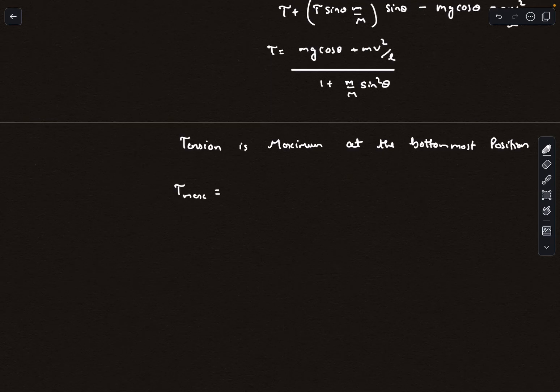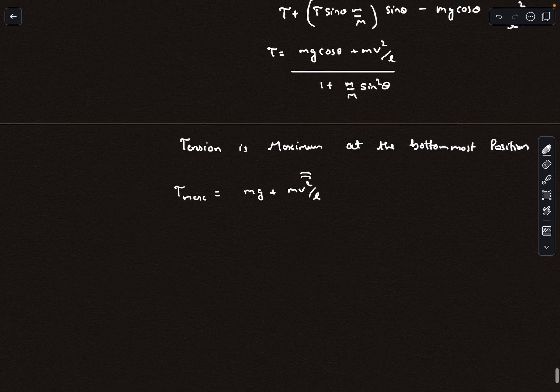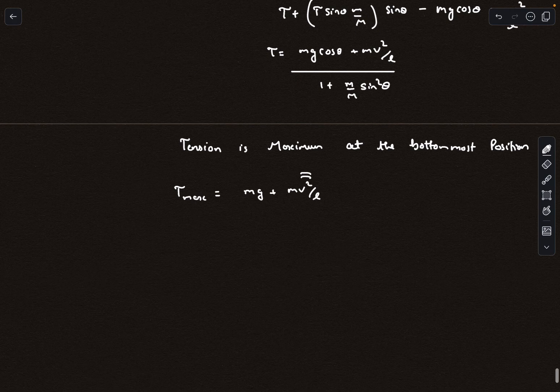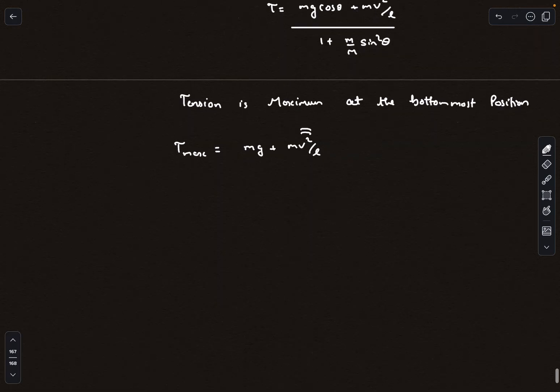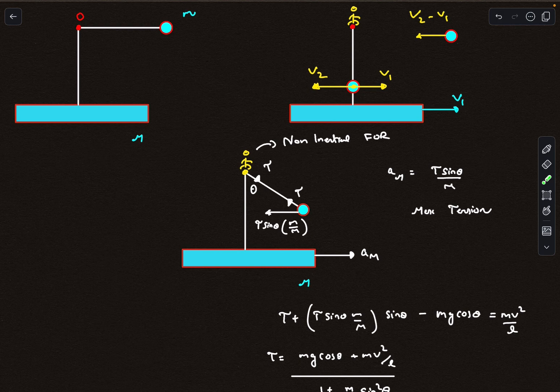Theta equal to zero, I get T max as mg plus m V squared by L. So now if I figure out V, which is the relative velocity at the bottommost point, then my question is done. We don't really care about this V1, we only want this V2, which is the relative velocity. And this is where the CM frame is going to help us.